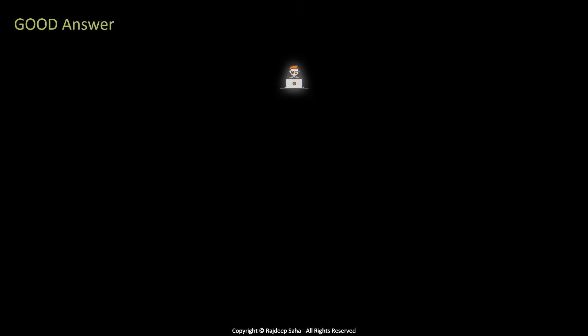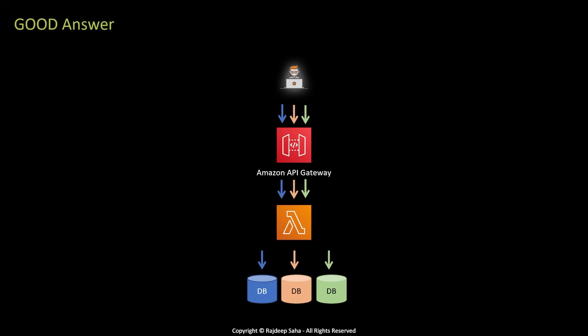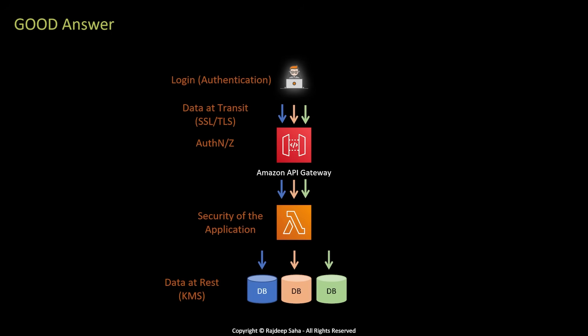A good answer might be: assuming my application is running in a serverless manner — all the APIs hosted in Amazon API Gateway, all the API backends handled by Lambda connecting to different databases — representing three microservices running. On the user side, I will implement authentication and secure data in transit using SSL/TLS. On the API Gateway, I will implement an authentication and authorization layer. Then handle security of data at rest — encrypt data at rest using KMS. The most important part is the security of the application itself, because this is where you get most of the questions and where you show you have actually designed and worked in an application.